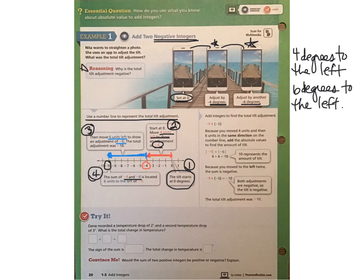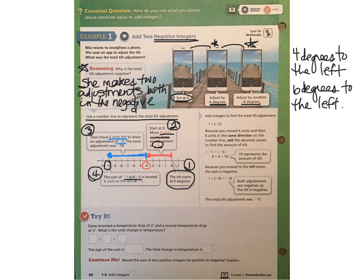So take a look back up at the top of the page where you see the reasoning box. Why is the total tilt adjustment negative? Well, she makes two adjustments, both in the negative direction. So that means she continues to move that to the left, the picture to the left, to represent that amount of tilt. So now I'd like for you to look at the second piece of this, which is how to do this without the number line. We can use absolute value and add the two integers together, or add their absolute values, because they're going in the same direction.